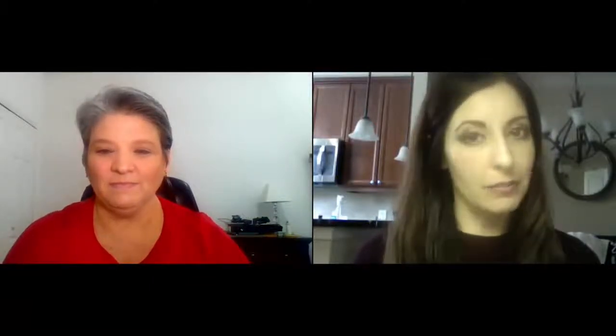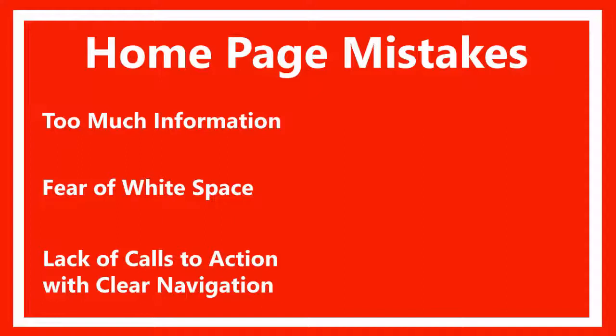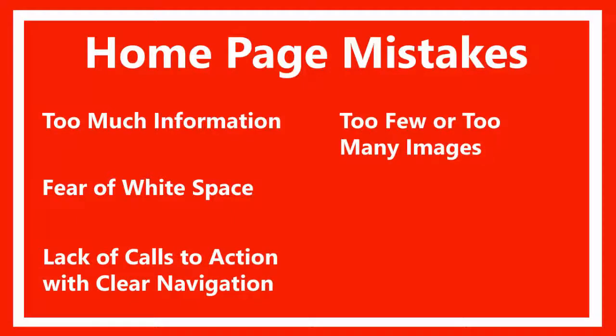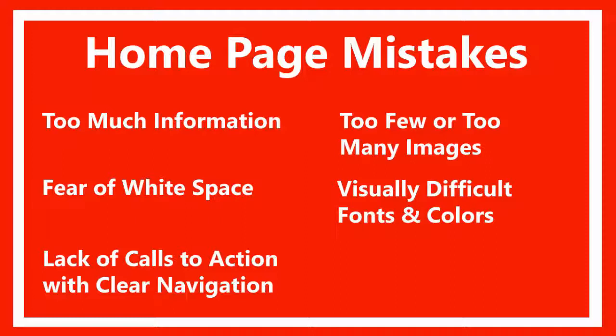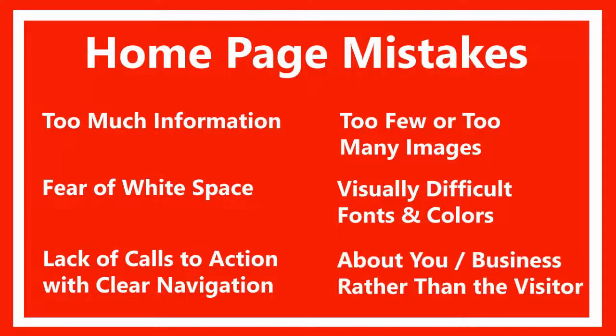So Pam, what are the things that we find wrong with home pages? We've identified six mistakes that a lot of people make: too much information on the home page; fear of white space, or filling up your page with all kinds of extra information that you don't need; a lack of call to attention and clear navigation for your users so they know what to do when they get there; too few or too many images — pictures, logos, clip art — which can really gunk up the page if you have too many; fonts that are visually difficult and colors that are visually assaulting; and generally making the home page more about you and what you want to communicate rather than about the visitors to your page. And we're going to go into all of these, but that last point I think is easy to misinterpret, so we'll definitely delve into that one as well.